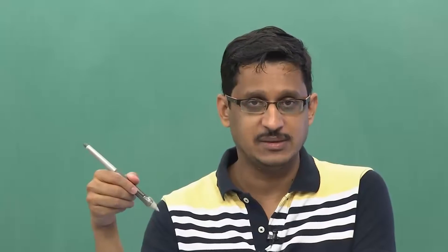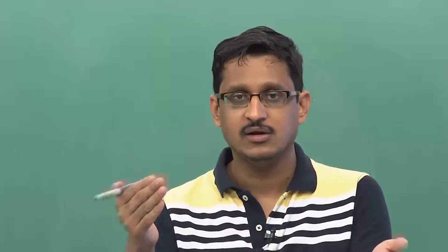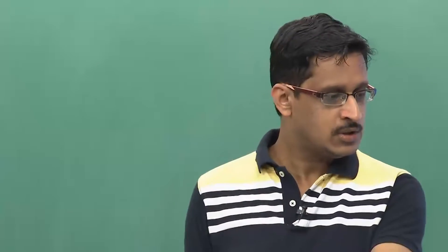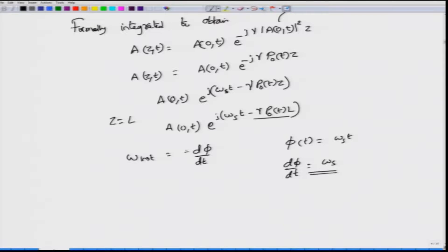Phase change with respect to time is called chirping, something well known from radar systems — you have a chirped pulse. If this is your phase then the frequency is given by d phi by dt, and to be consistent with the formulation phi equals omega_s t, we take the positive derivative of phi. So the instantaneous frequency is given by d by dt of omega_s t minus gamma P(t) into L.